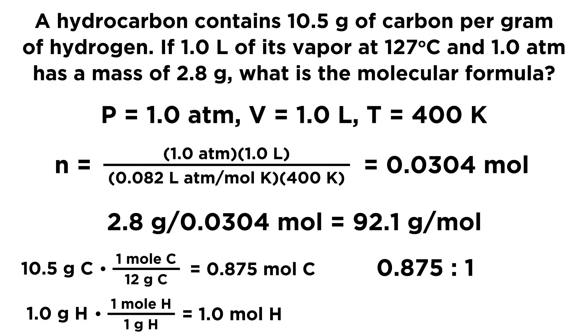Which is a 7 to 8 ratio if we change that to have integer values. So we know, therefore, that the empirical formula is C7H8. We know that for every 7 carbon atoms, there are 8 hydrogen atoms.